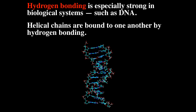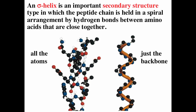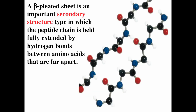Hydrogen bonding is also responsible for the secondary structure of proteins. The alpha helix is one such secondary structure — hydrogen bound to nitrogen is attracted to oxygen, forming hydrogen bonds. Secondary structures are those that maximize hydrogen bonds; the stronger the attraction, the more stable. The beta sheet is another secondary structure, where hydrogen bound to nitrogen is attracted to oxygen, forming multiple hydrogen bonds across the sheet.